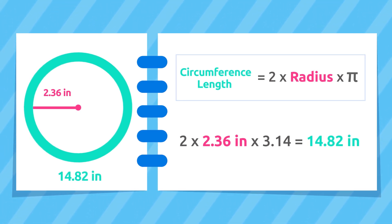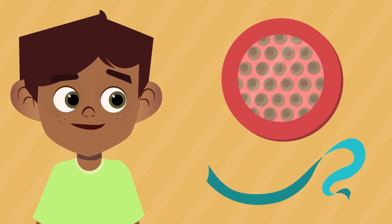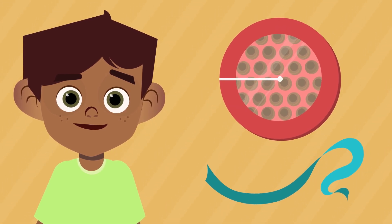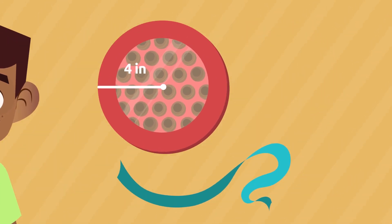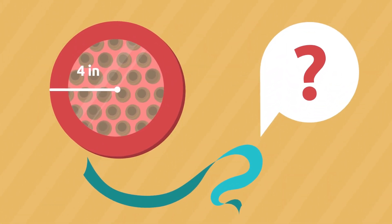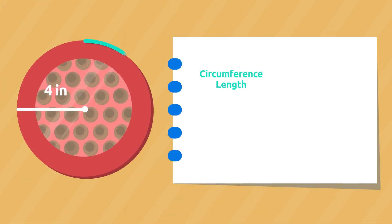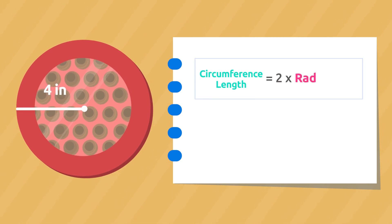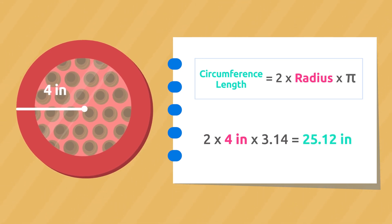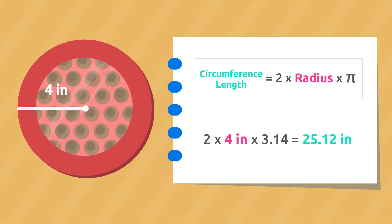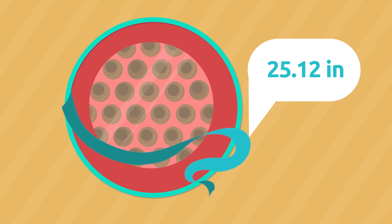Let's look at some real-life situations. Mark wants to decorate this box of chocolates using some wrapping string. The radius of the circumference of the box measures 4 inches — how many inches of wrapping string does he need to buy? To figure it out, we calculate the length of this circumference: we multiply the radius by 2 and by pi. Mark needs to buy 25.12 inches of wrapping string to decorate the box of chocolates.